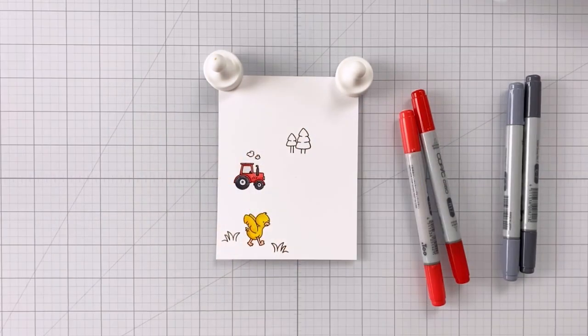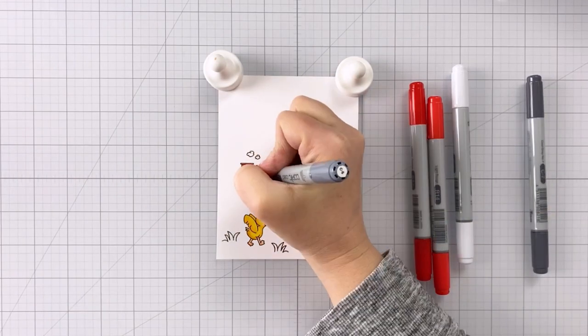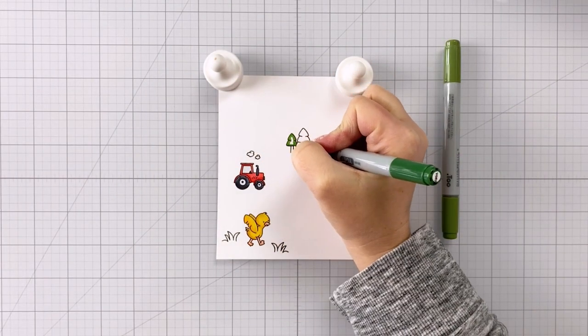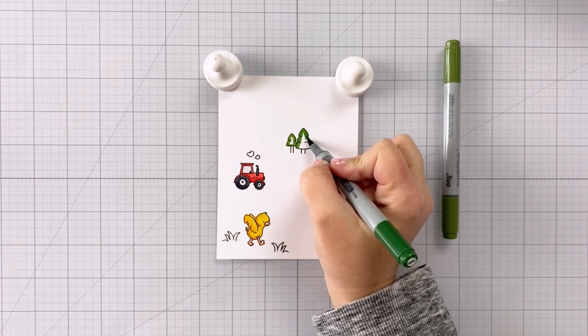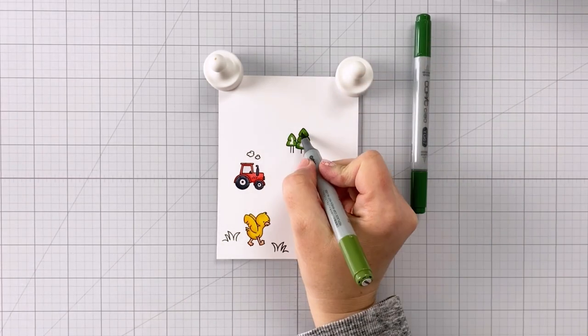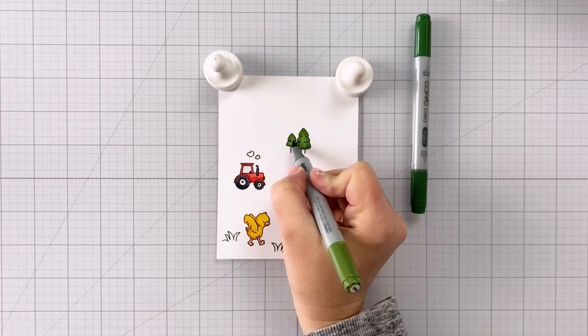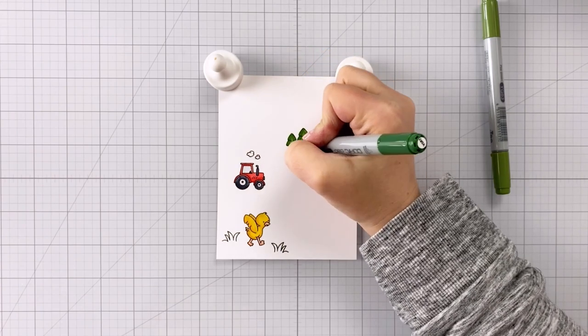Once I have that done I can move on to my trees and for my trees I'm going to be using YG63 and YG67. These are really nice yellow greens and for the trunks I'll be using E47.